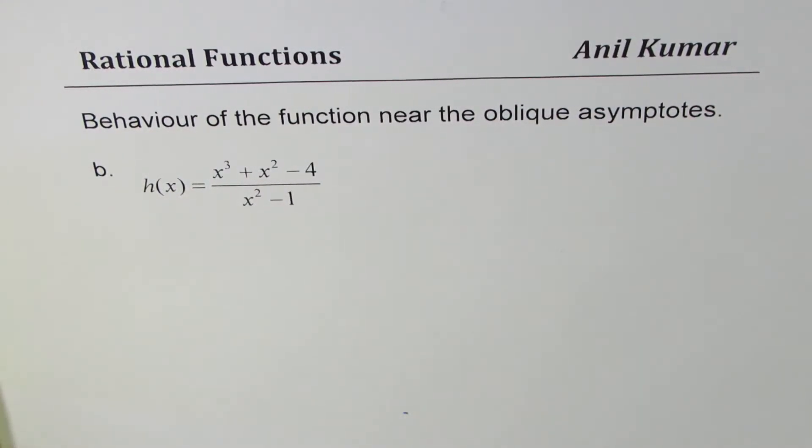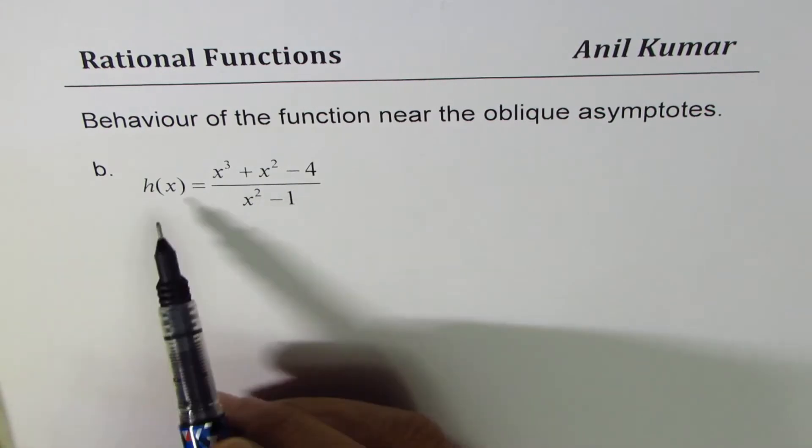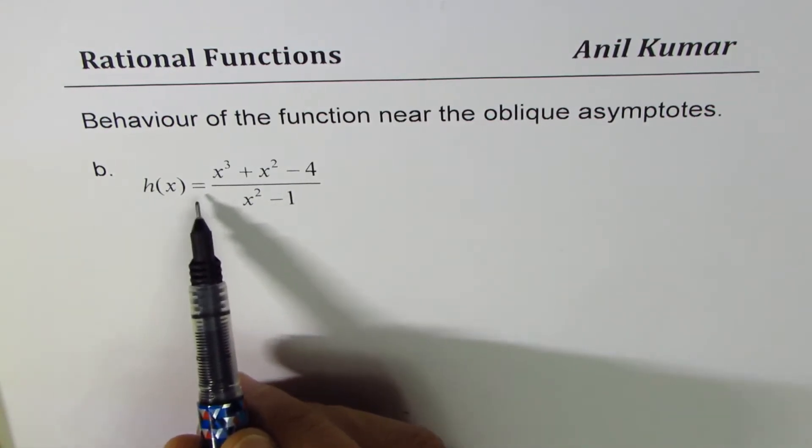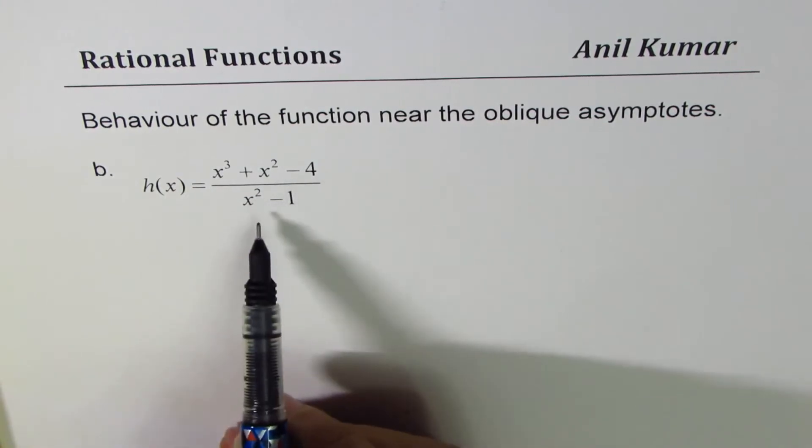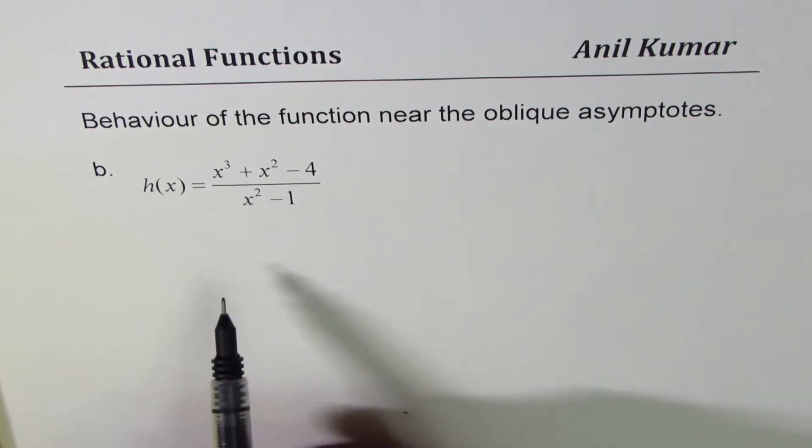I'm Anil Kumar and here is another example on understanding behavior of the function near the oblique asymptote. The function given to us is h(x) equals x cubed plus x squared minus 4 divided by x squared minus 1.